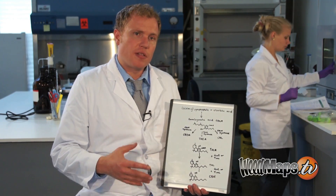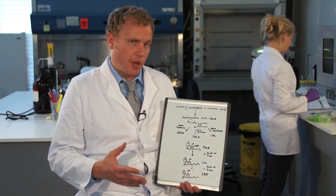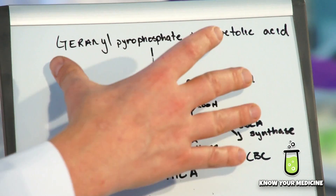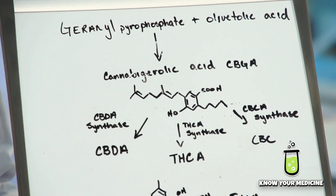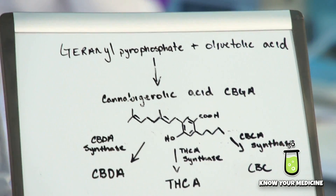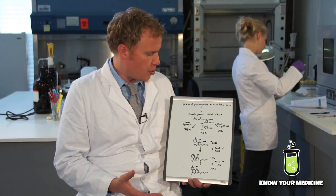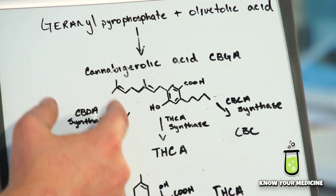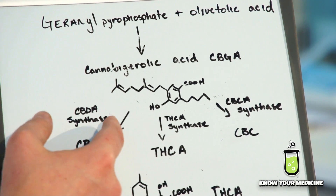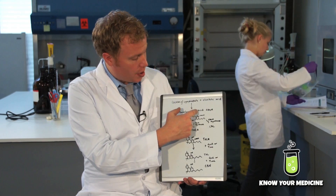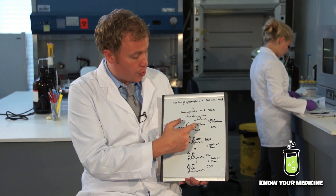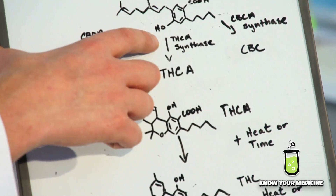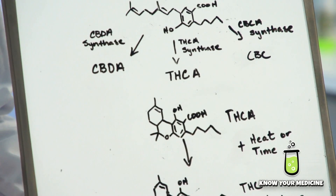I'll show you how CBN is synthesized in the plant. CBN starts with geranyl pyrophosphate and olivetolic acid, like most of the cannabinoids. Those two come together in an enzyme-catalyzed reaction and form cannabigerolic acid, CBGA.